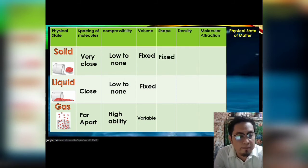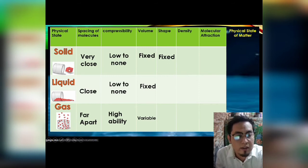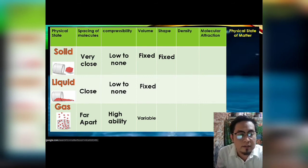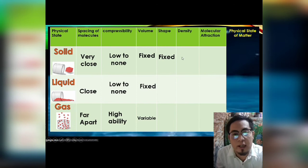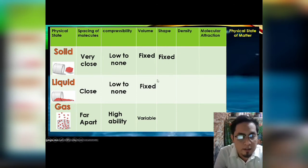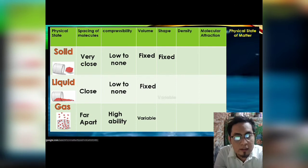Now let us look at shape. The shape of a solid is fixed. All solids you look around are fixed — they have a certain shape. Liquid, on the other hand, is variable, meaning its shape varies.